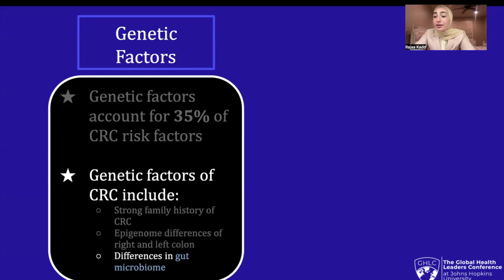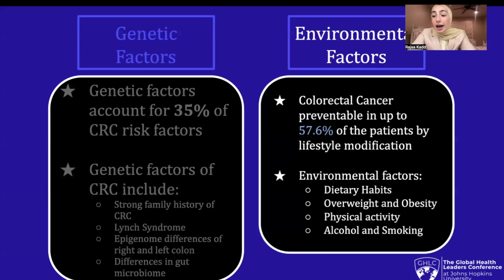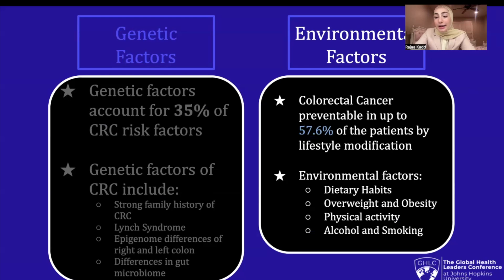Additionally, differences in the gut microbiome have been increasingly implicated in the rising incidence of early onset CRC, and may also contribute to higher CRC incidence in African Americans. Environmental factors also play a very large role in colorectal cancer incidence. Colorectal cancer is preventable in up to 57.6% of patients by lifestyle modifications, according to CA: A Cancer Journal for Clinicians, a flagship journal for the American Cancer Society. Some environmental factors include dietary habits, overweightness and obesity, physical inactivity, and alcohol and smoking.